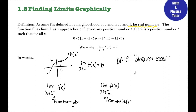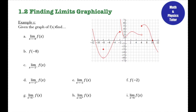Let's look at a couple of examples of finding limits graphically. Example one: given the graph of f of x, find all these things. Starting with part a, I want the limit as x approaches negative 8. I'm going to find my x value of negative 8 and follow my graph until I get there. Coming from the left-hand side, I get to a y value of negative 6. Coming from the right-hand side, I also get to a y value of negative 6. Since my limit is the same from both directions, that is my limit. Even though the function is not defined there — there's an open hole — my limit is still that y value. The limit is always where you're going, so the limit here is negative 6.